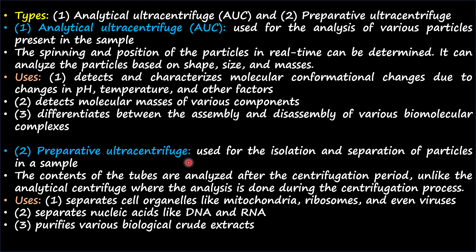Preparative ultra centrifuge is used for the isolation and separation of particles in a sample. The contents of the tubes are analyzed after the centrifugation period, unlike the analytical centrifuge where analysis is done during the centrifugation process. That means in preparative ultra centrifuge, you can detect or identify something only after the centrifugation process is over — you cannot detect anything in real time. That is the main difference between AUC and preparative ultra centrifuge.